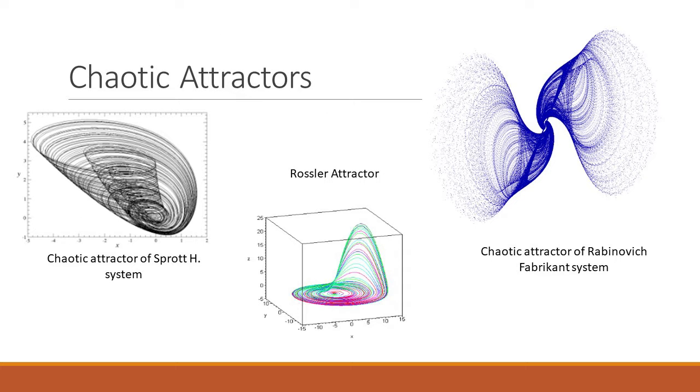Here are some examples of chaotic systems. These are their attractors, which is one way to understand what chaos looks like. There's Sprott H system, the Rossler, the Rabinovich. These are all just three examples of many different chaotic systems possible.